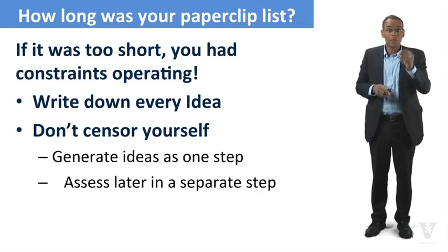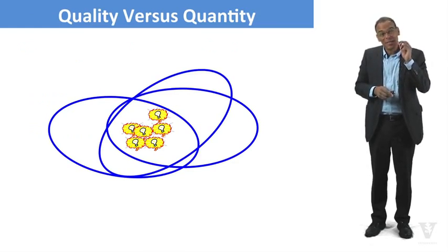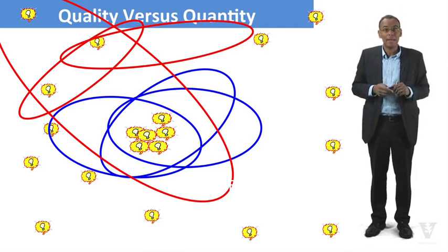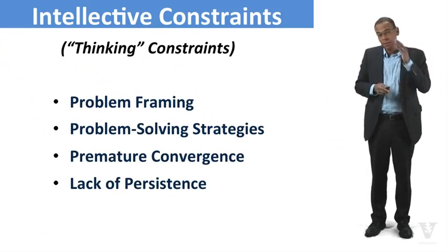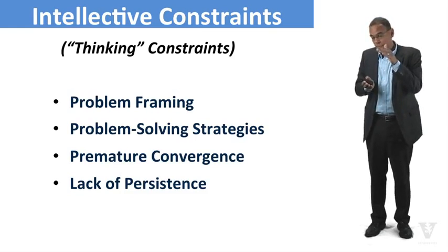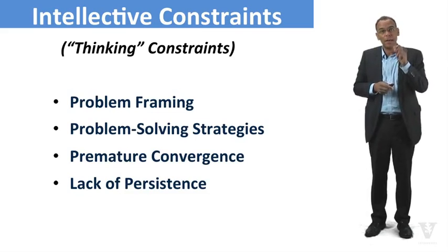A key for overcoming this intellectual constraint: generate ideas and assess them separately. We're after quality, which comes out of quantity — the more ideas you have, the more you explore that space, the better the ideas you'll come out with. So the intellectual constraints: problem framing — the way we draw the boundaries around the problem; problem-solving strategies — the different ways we approach it; premature convergence — not saying this is the answer too soon; and not persisting — not pushing through to find a bunch more answers once you've found one.